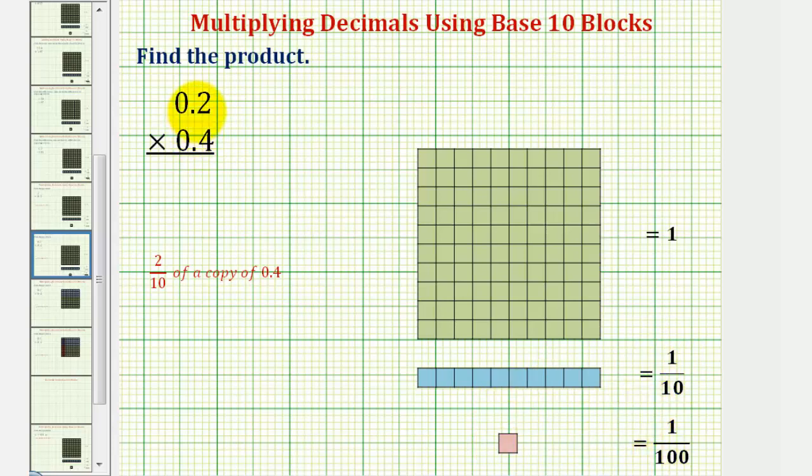Because we have 2 tenths times 4 tenths, this means we want 2 tenths of a copy of 4 tenths. So we don't even get a whole copy of 4 tenths. We only get 2 tenths of 4 tenths.